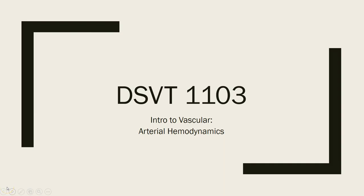There are a few terms I want you guys to know that I'll be using, so just write these down. Volume flow is how much flow. Velocity is how fast our blood is moving throughout the body. Steady refers to a constant velocity. Pulsatile is a variable velocity due to cardiac contraction. Phasic flow is a variable velocity due to respiration. Those are just a few terms to be familiar with.